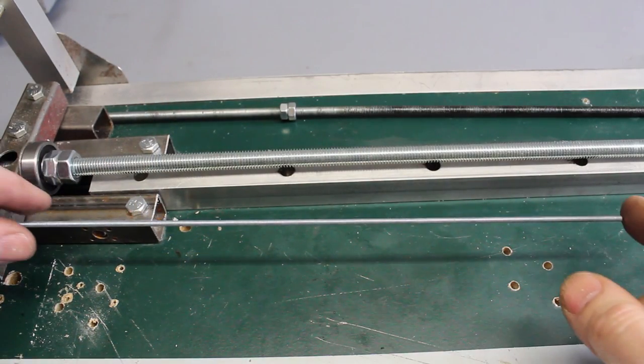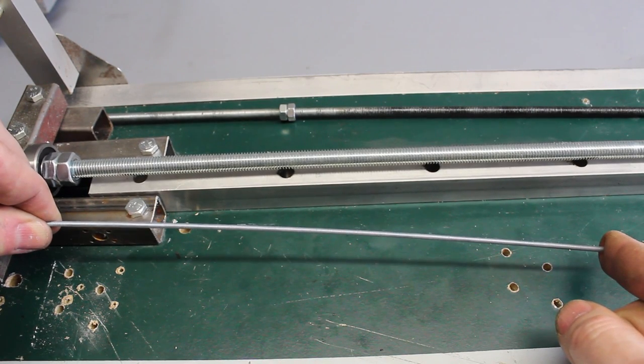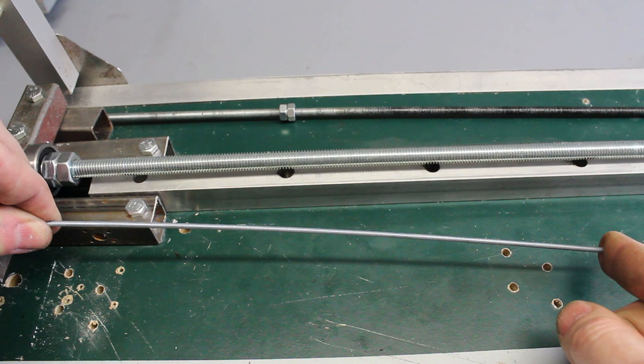On the other hand, a 3mm rod is too weak to absorb axial forces. The 6mm thread is a good compromise.